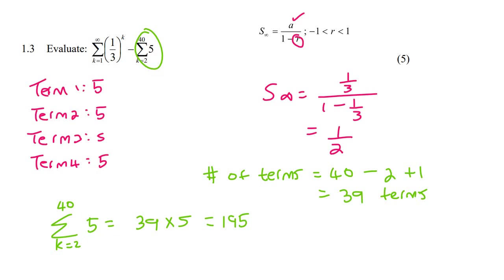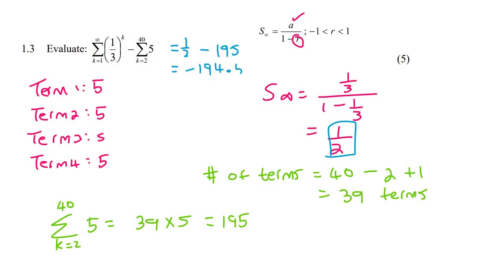So now we can finally work out the answer. The final answer is going to be the sum to infinity, which was a half, minus the 195, and that will give us minus 194.5.